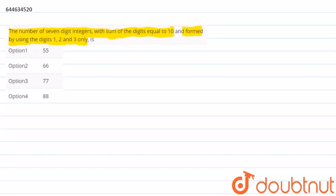That five 1's, one 2, and one 3 - this is case 1. And in case 2, we use four 1's and three 2's for sum 10. So now from here we can say that there are two possible cases.